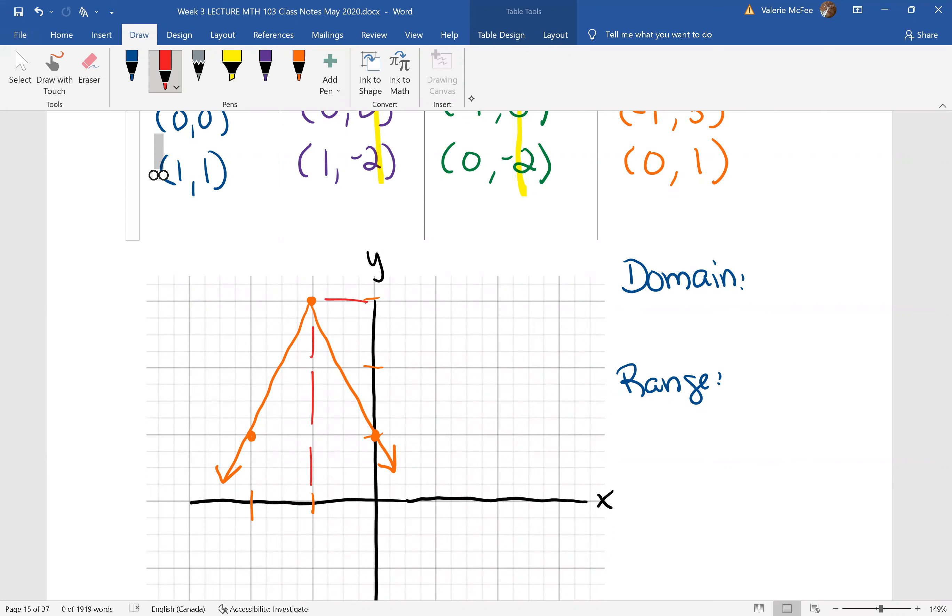Find the domain and the range. The domain is still the set of all real numbers. Our arrows are pointing infinitely left and right. But the lowest values will be at negative infinity. The highest value is there at 3.